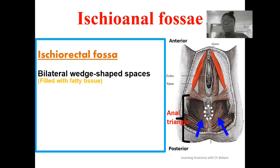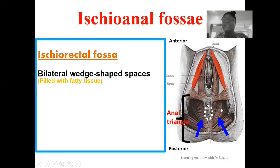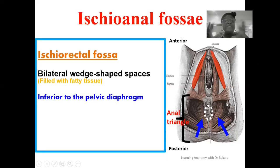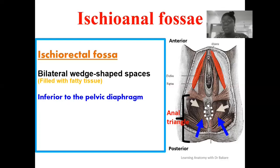We have two ischioanal fossae, one on each side, highlighted here in blue. This ischioanal fossa is not left open — it is padded up with fatty tissue, so it is not an open free space but is embedded with fatty tissue. The ischioanal fossa is also located inferior to the pelvic floor or pelvic diaphragm. The region highlighted in white is where we have the pelvic floor, forming like a structure around the roof of this space.